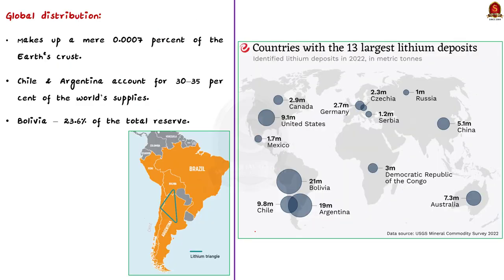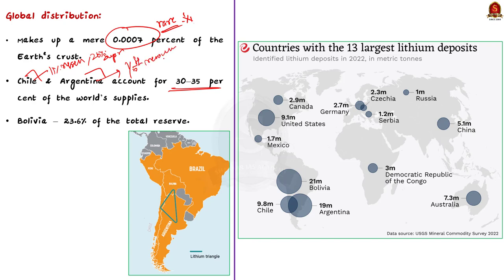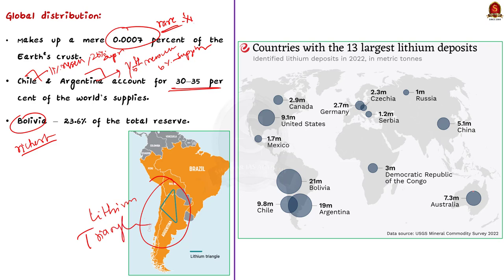Lithium makes up a mere 0.007% of the Earth's crust. Latin American nations — primarily Chile and Argentina — account for 30 to 35% of world supplies. Chile alone has 11% of world lithium reserves and supplies 26% of global requirements, while Argentina supplies about 6%. Bolivia has the richest known lithium deposits in the world. Due to the contribution of these three countries, they are together known as the lithium triangle. Australia is also among the large lithium producers globally.